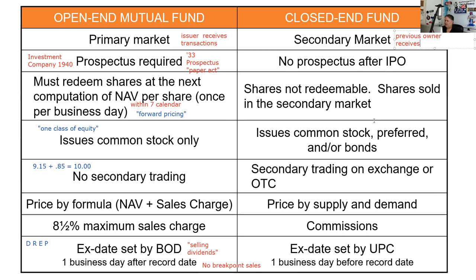Once the closed-end fund does its IPO — its initial public offering — it will not be issuing any more shares. That's actually helpful: if I have a closed-end fund, I don't want my manager to have to meet redemption requests. That would be one reason to choose the closed-end fund version, particularly in a volatile marketplace. For example, the Mexico Fund — MXF — trades on the New York Stock Exchange like a stock. If you can't handle the volatility of the market price of the closed-end fund, you just sell it to someone else for more or less than you originally paid.